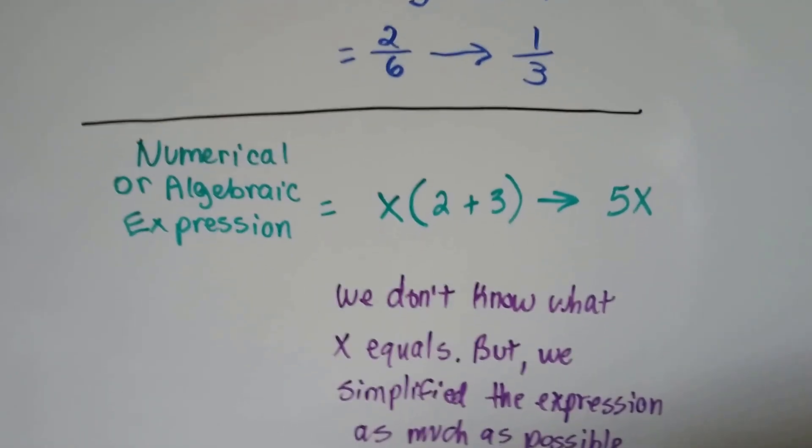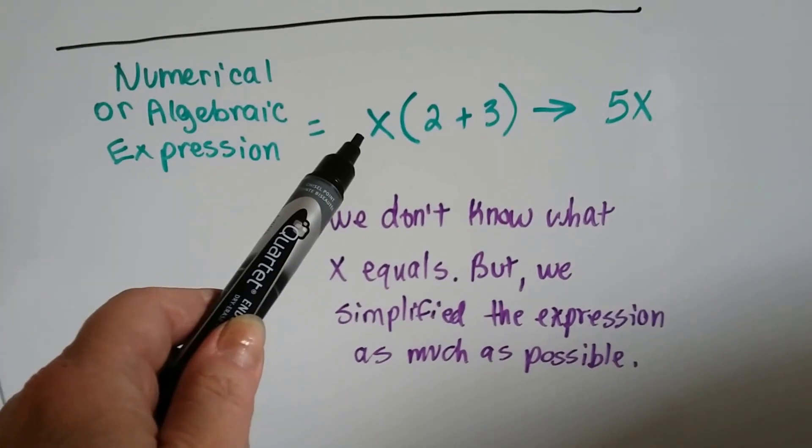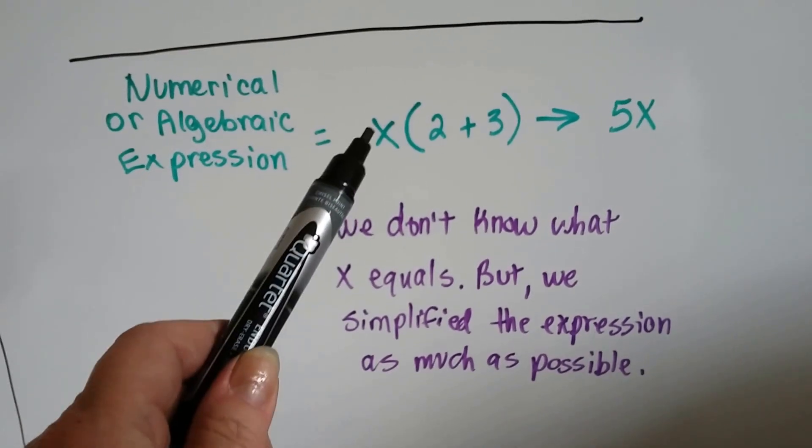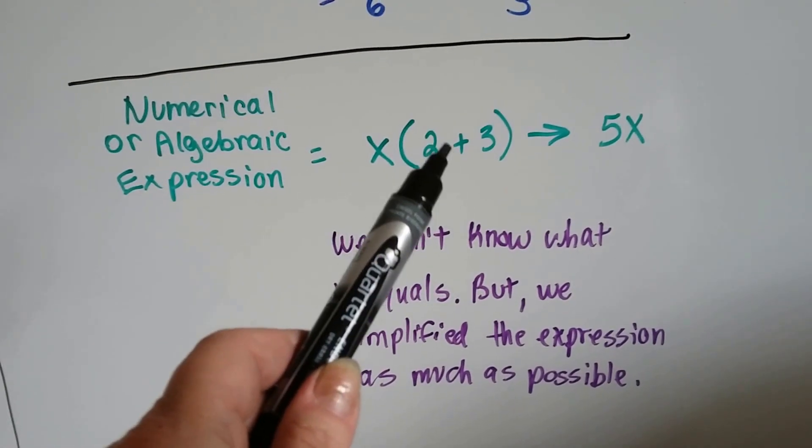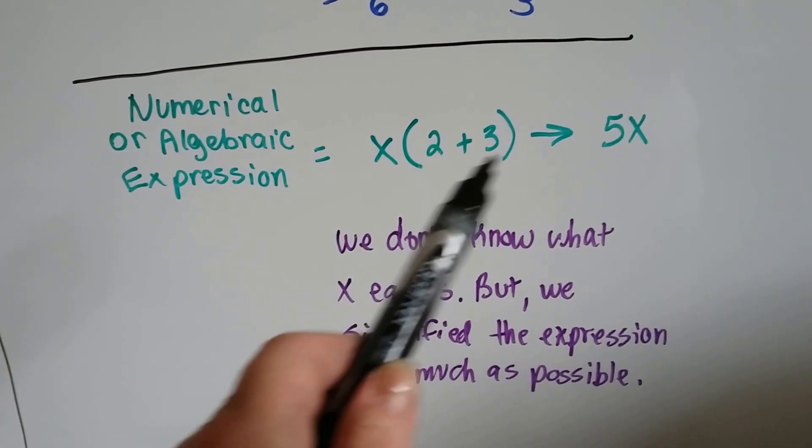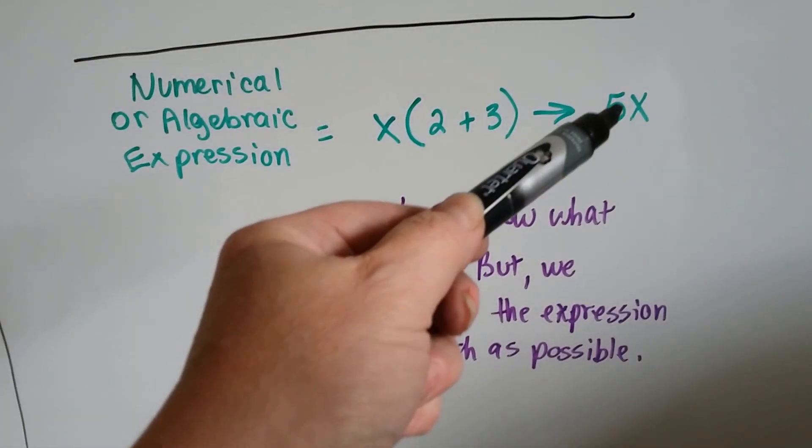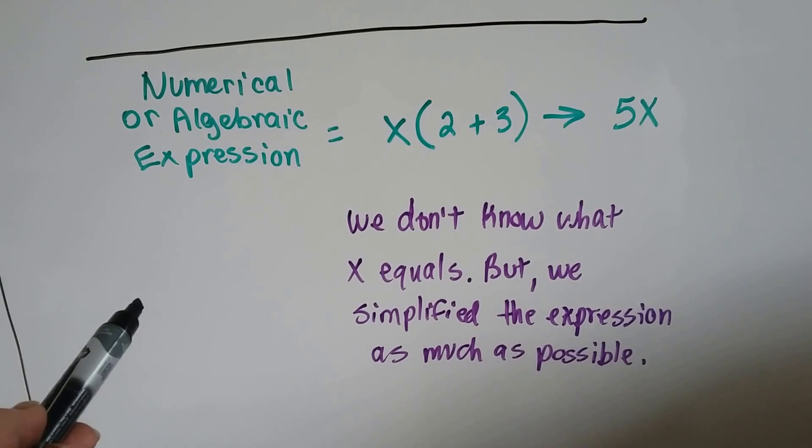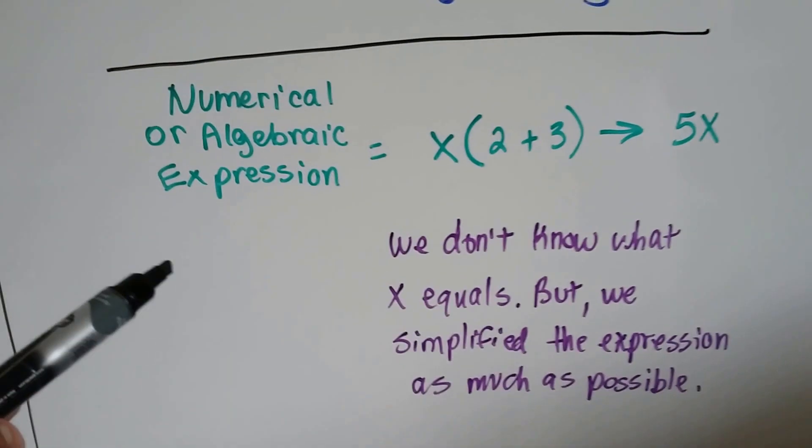A numerical or algebraic expression, when we simplify those, we're not solving it. We're simplifying it. If we have x times 2 plus 3, of course, order of operations tells us to do in the parentheses first. We've got 5. We've got x times 5. We have 5x. We don't know what x equals. We don't know what the answer to this is. Because all we know is we have simplified it and gotten 5x. We simplified it as much as possible.